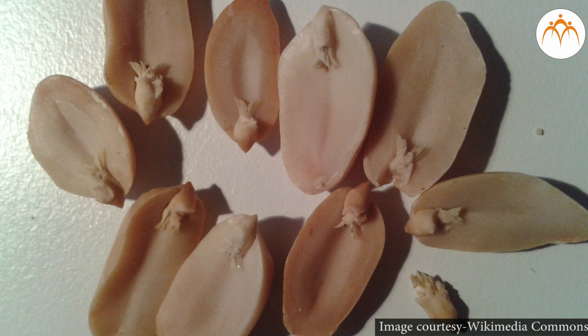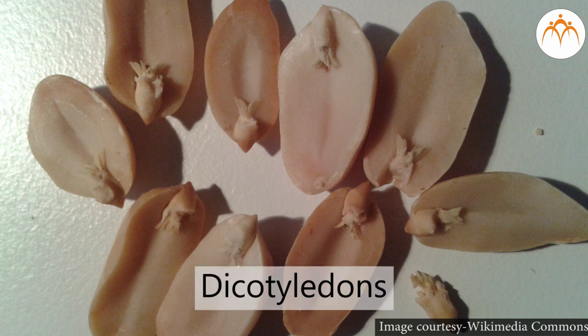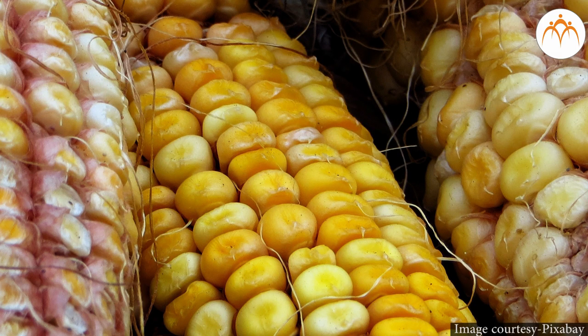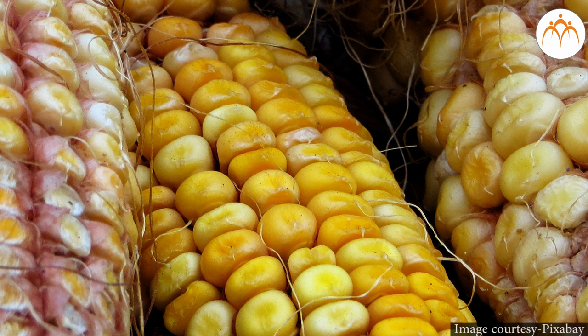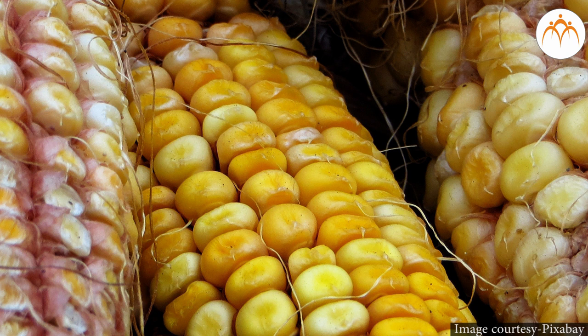These parts are called cotyledons. When there are two cotyledons in seeds, these are dicotyledonous seeds. Now try to press soaked maize seeds. You will not get two parts. It is only one. These seeds have only one cotyledon and are called monocotyledonous.